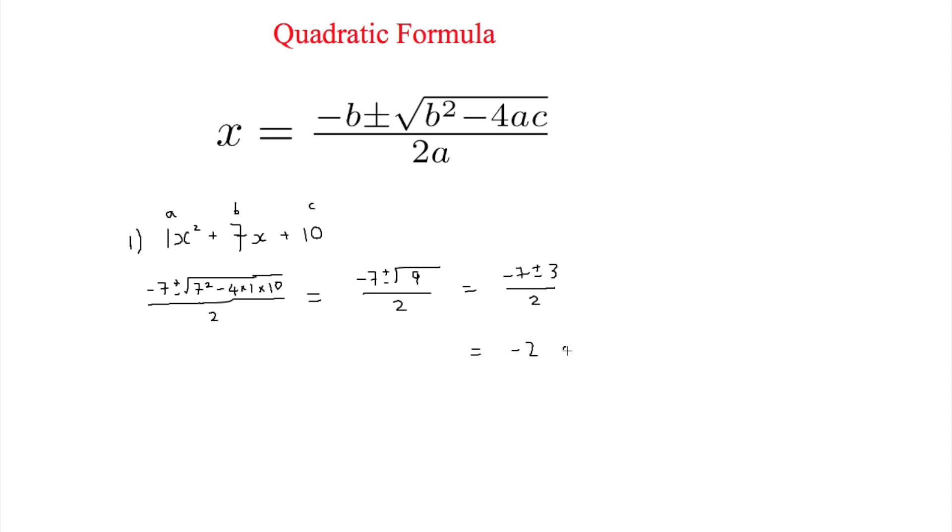The second answer is negative 7 minus 3, which equals negative 10. Negative 10 divided by 2 equals negative 5.